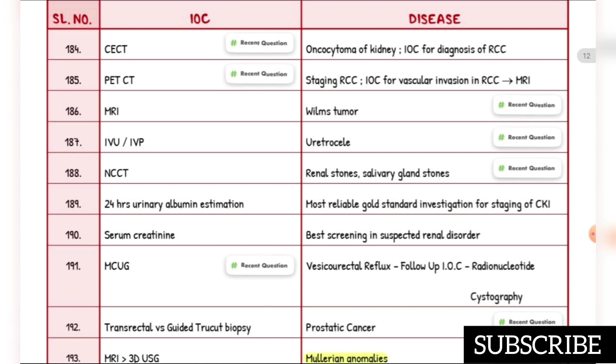Investigation of choice for vascular invasion in renal cell carcinoma is MRI. Investigation of choice for Wilms tumor is MRI. Investigation of choice for ureterocele is IVP and IVU. Investigation of choice for renal stones is CCT.